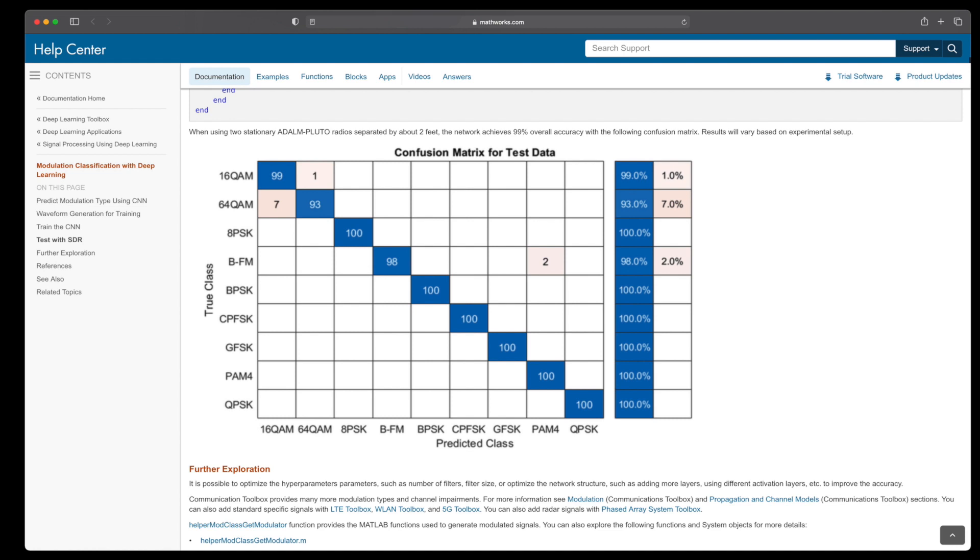The bottom line, though, is that it is possible and sometimes preferred to train a network using simulated data. And it will work in real situations as long as the simulation generates signals that closely match the conditions of the real system. Or is more strenuous than the real system, so it bounds it.